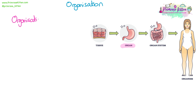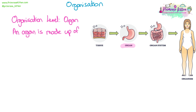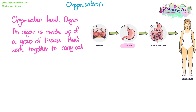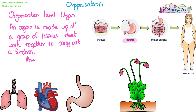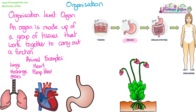The next level of organisation up from tissue is an organ. An organ is made up of a group of tissues, and again this group of tissues works together to carry out a function. Some animal organ examples: the lungs, whose function is to exchange gases; the heart, whose job is to pump blood around the body; and the stomach, whose job is to digest food.